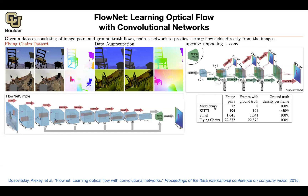There are other datasets like Middlebury and KITTI, but with catches. The dataset sizes are very small. KITTI comes from real sensors — for every frame you have ground truth, but it's very sparse: 50% of pixels have no labels. Middlebury is very small. Sintel is actually an animation video, and because it's animated, you know the ground truth of your flow map. Flying Chairs, which you created, has a reasonable size.